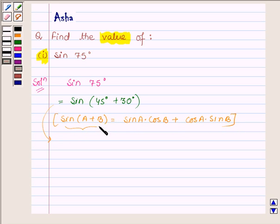Therefore applying this formula on this equation, this can further be written as, here A is 45 degree and B is 30 degree. So it can further be written as sine 45 degree into cos 30 degree plus cos 45 degree into sine 30 degree.